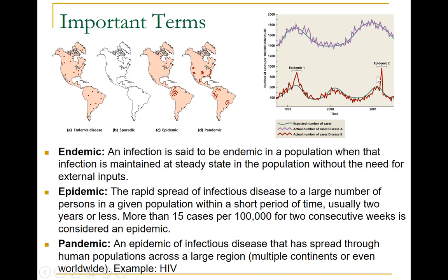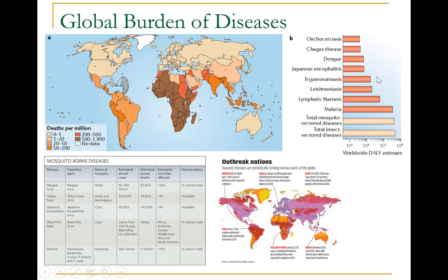The major vector-borne diseases together account for around 17% of all infectious diseases globally. The burden of these diseases is highest in tropical and subtropical areas and they disproportionately affect the poorest populations in the world. As shown in the global map, mosquito-borne diseases such as dengue, malaria, chikungunya, yellow fever, and Zika take a very large toll on humans. Especially malaria, which takes approximately one million lives every year.